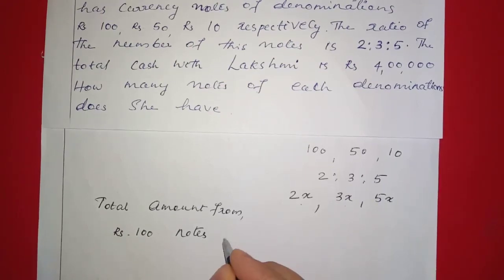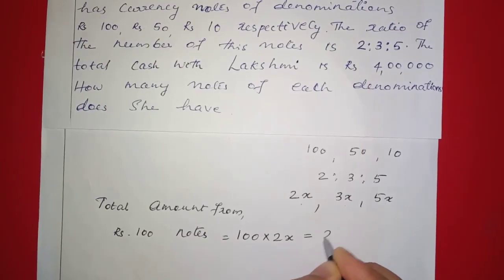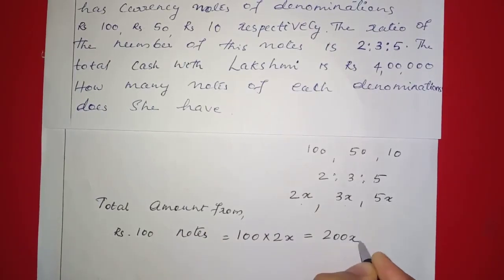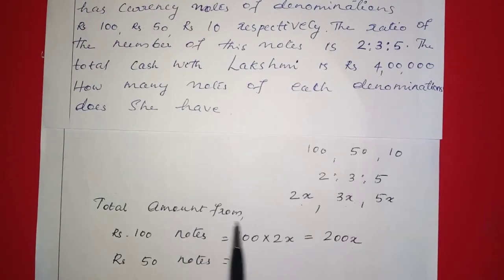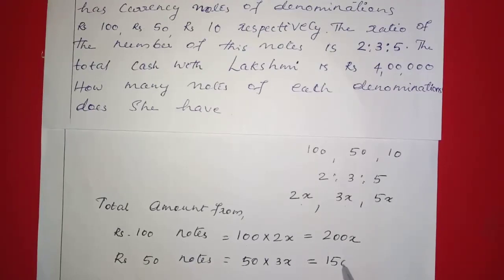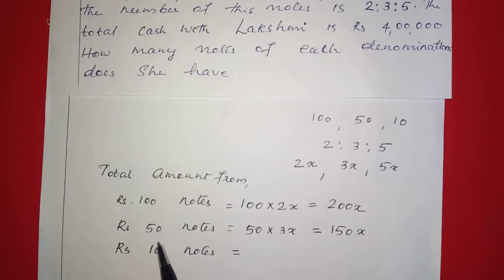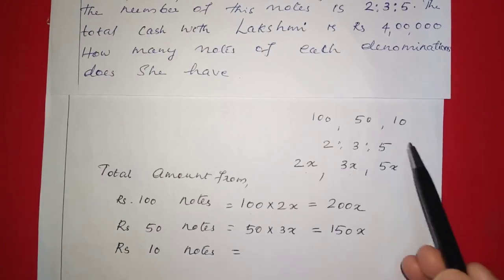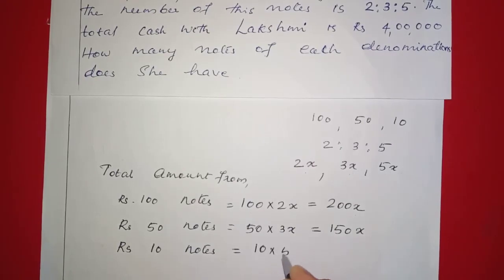The total amount from 100 rupee notes is 100 into 2x, which equals 200x. The total amount from 50 rupee notes is 50 into 3x, which equals 150x. 3 into 50 is 150. The total amount from 10 rupee notes is 10 into 5x, which equals 50x.